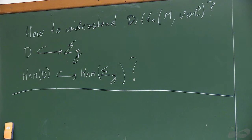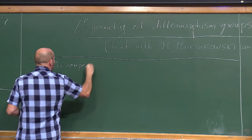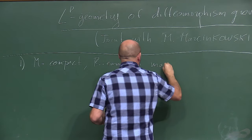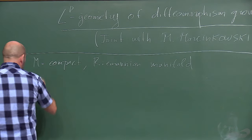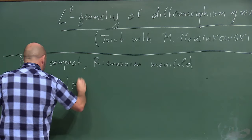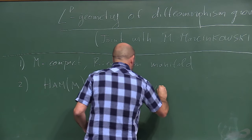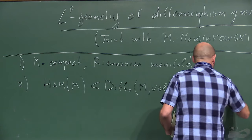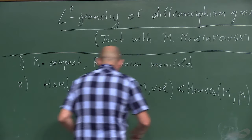Let me put some setup and a little bit of history. M is a compact Riemannian manifold. If it is symplectic, then Ham(M) is a subgroup of Diff₀(M, vol), which is a subgroup of Homeo₀(M, μ). The measure is just given by the volume form.